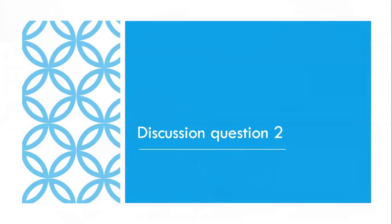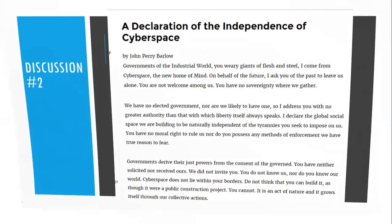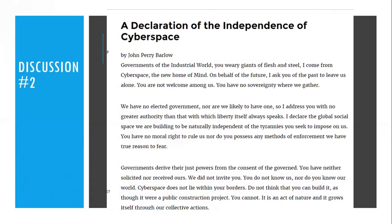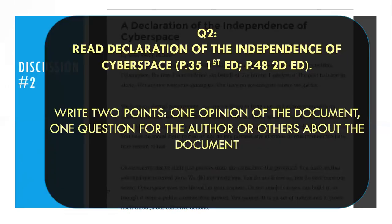I want you to look at this document — depending on which edition, it may be on different pages. It starts off with 'Governments of the industrial world, you weary giants of flesh and steel, I come from cyberspace.' I want you to read this document from chapter two and then answer this question: write two points — one opinion of the document and one question for the author or others about the document. If you're in the first edition, this is page 35; if you're in the second edition, it's page 48.